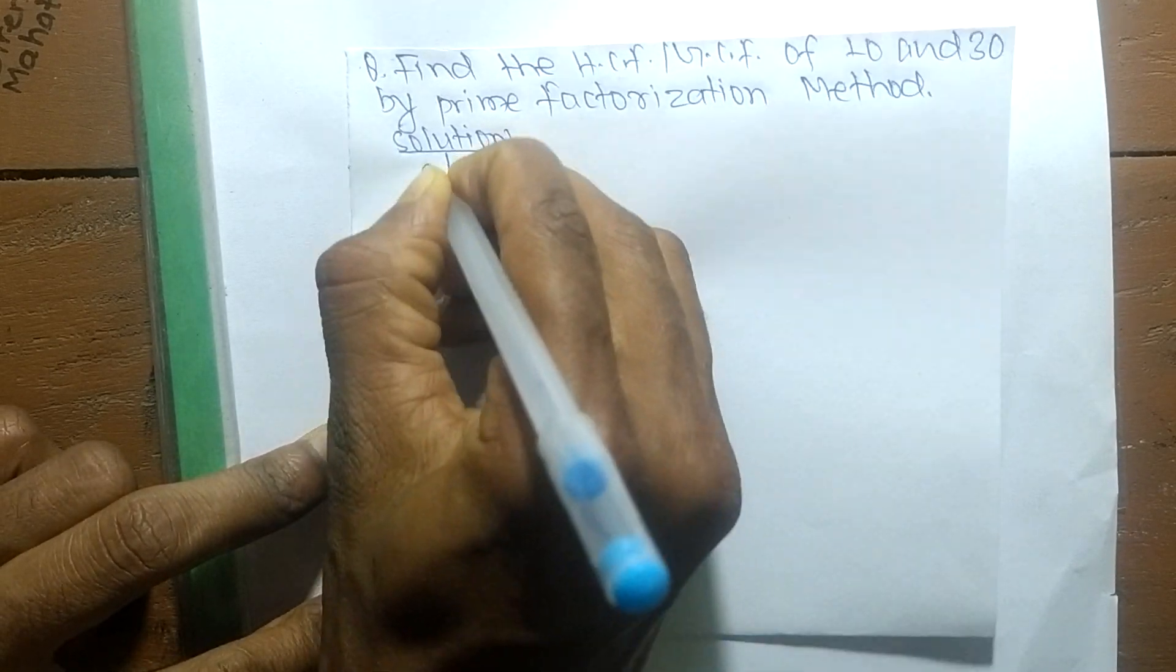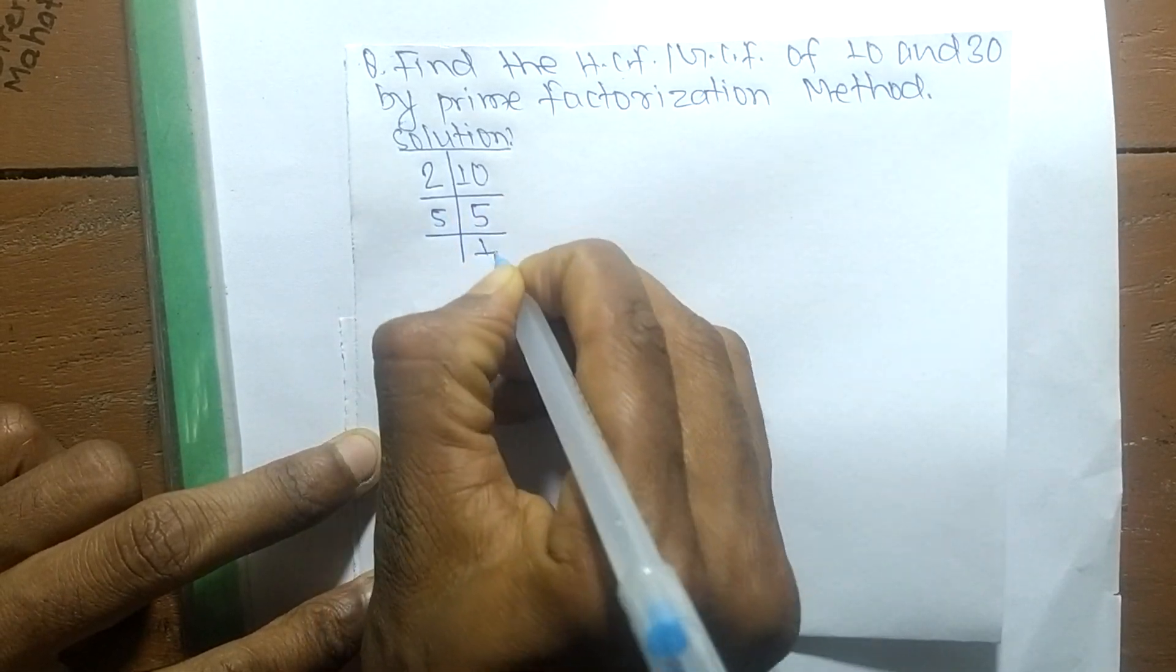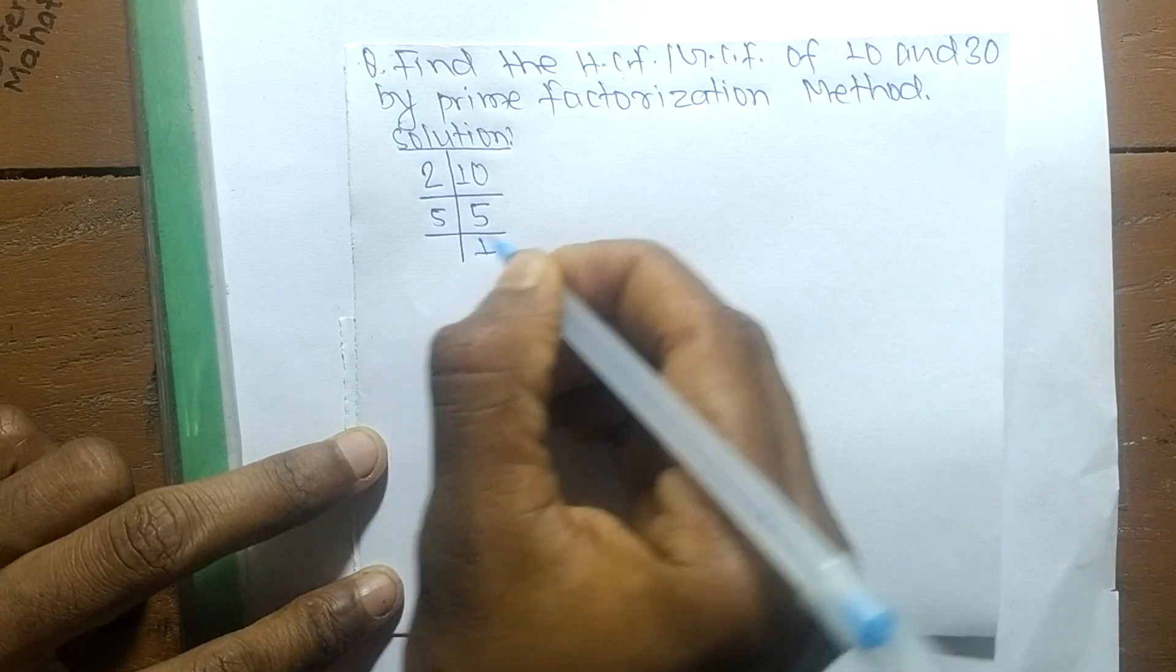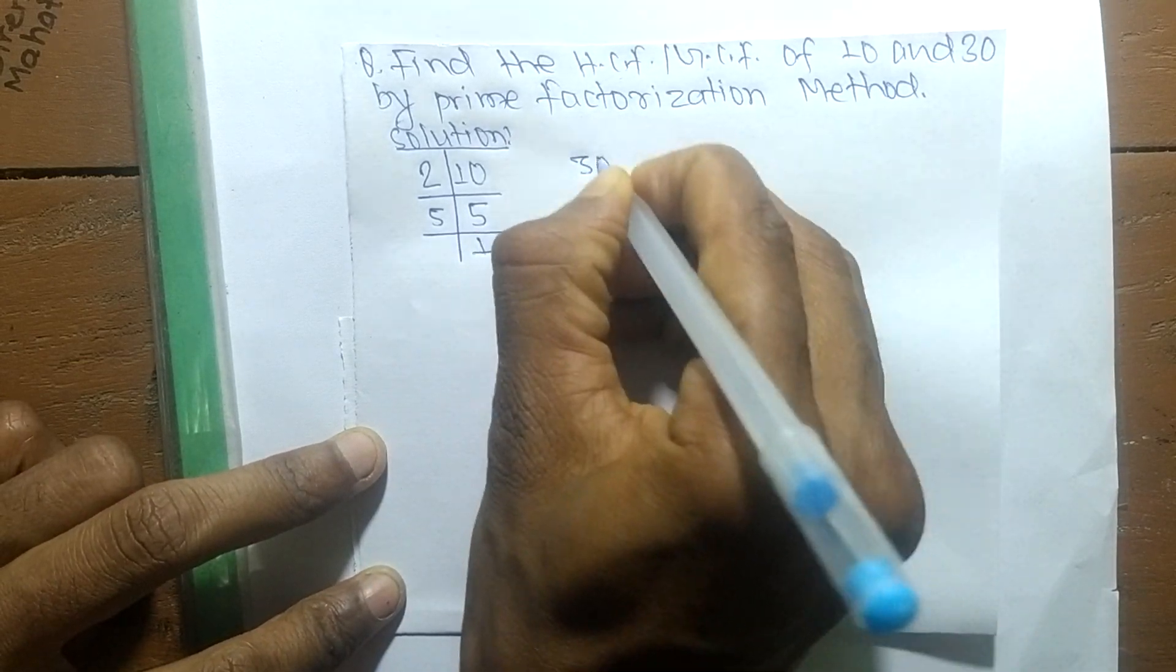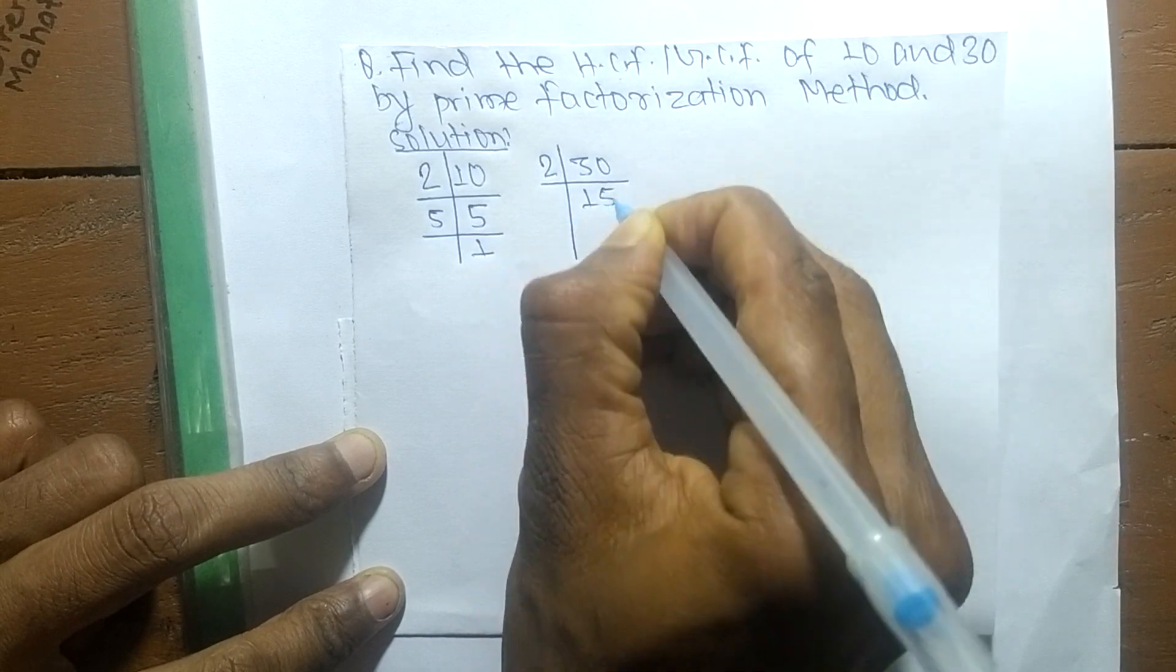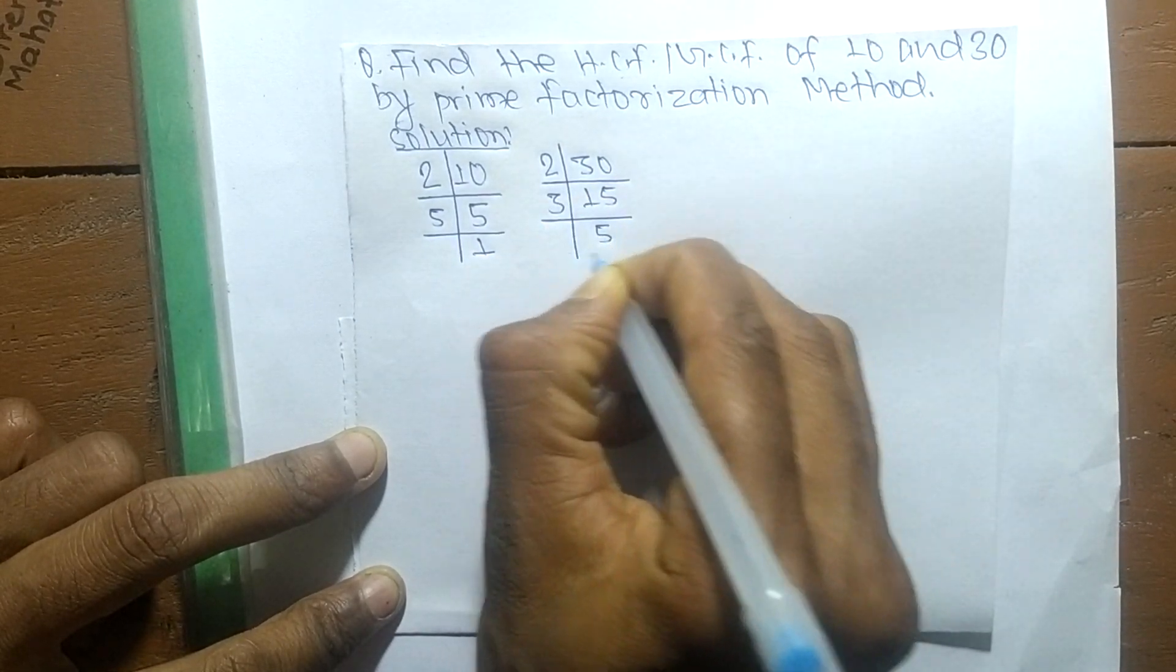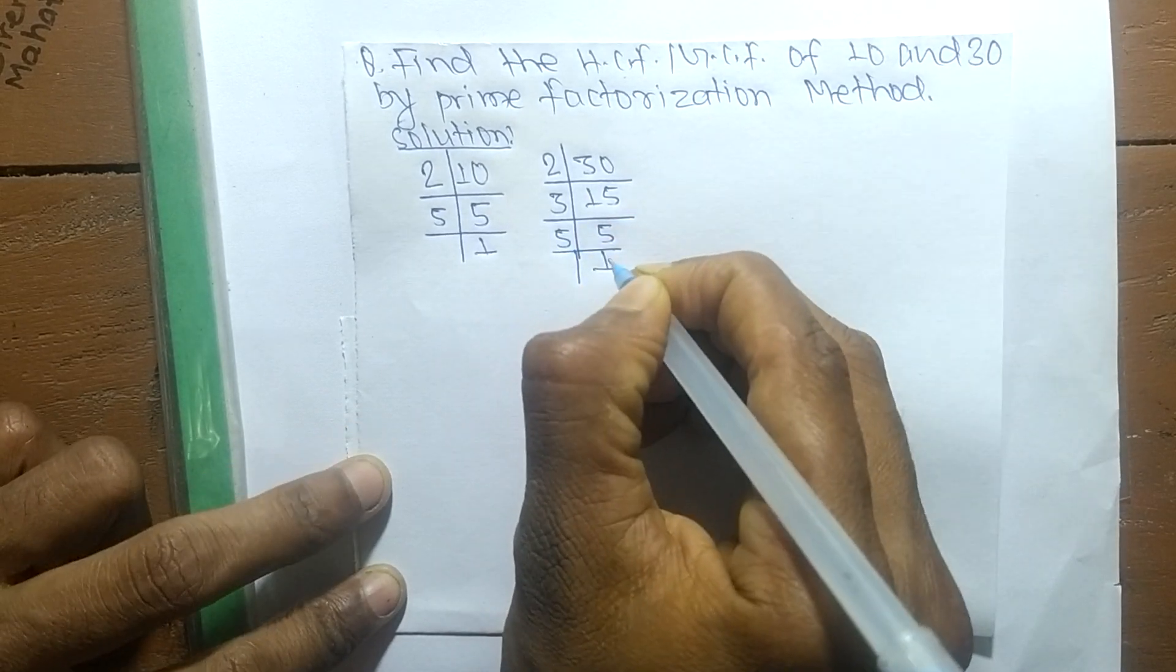The prime factors of 10 is 2 times 5: 10 equals 2 times 5, and 5 times 1 equals 5. The prime factors of 30 is 2 times 15, which equals 30. Then 3 times 5 equals 15, and 5 times 1 equals 5.